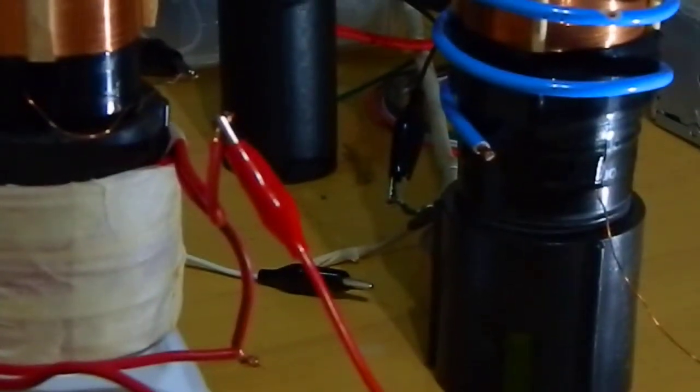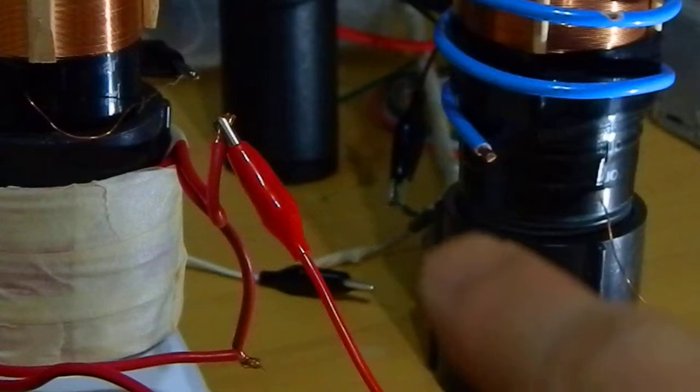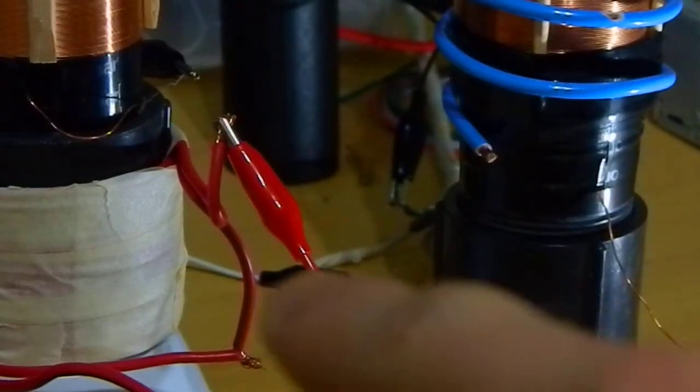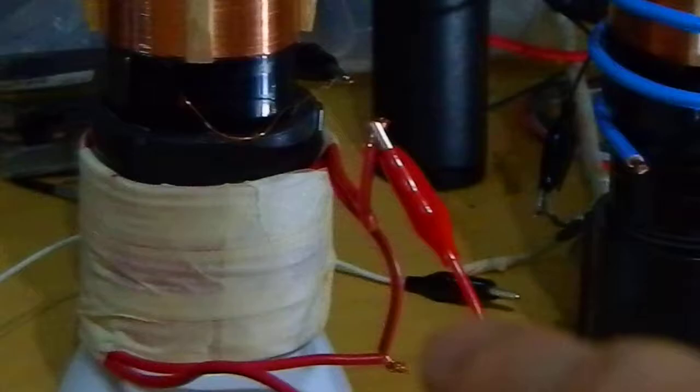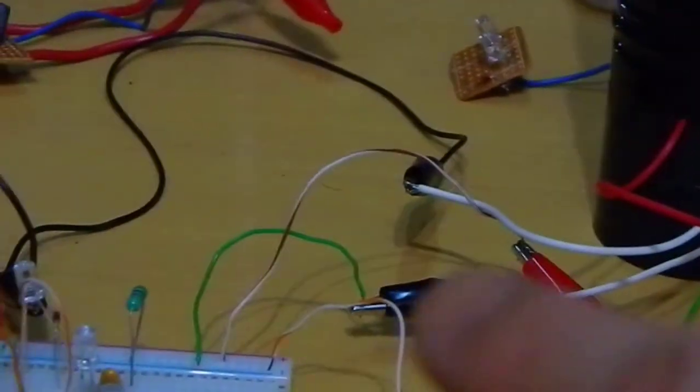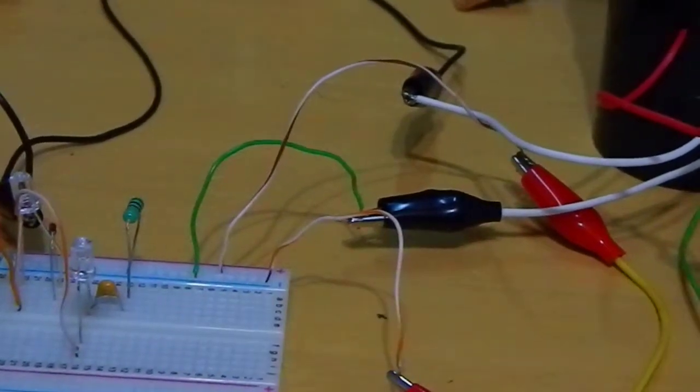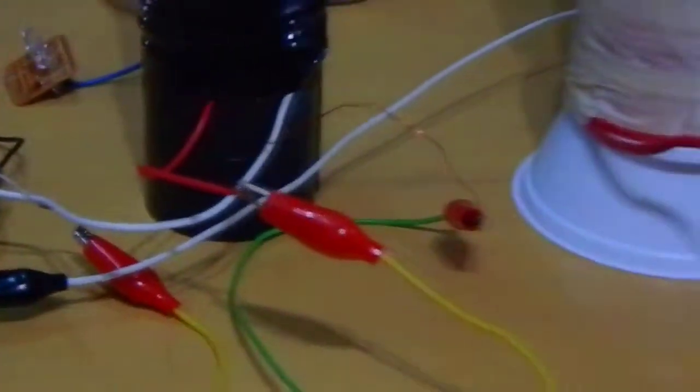Where this black alligator clip is connected is the earth ground. And this white wire coming here is connected to the negative rail of the Slayer Exciter. Now it is not connected.